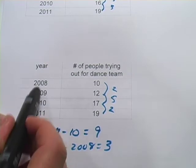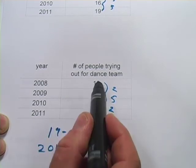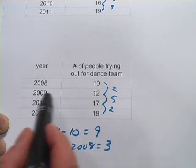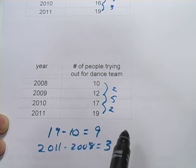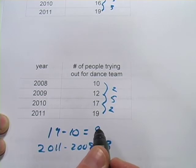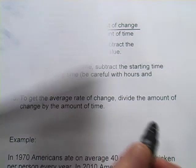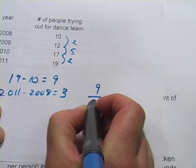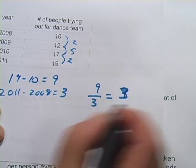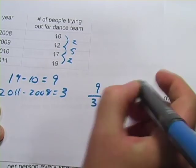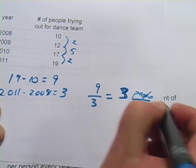Now, some people get a little hung up here and say it looks like there are four years. How come it says there are three years? Well, we really only have three years of change — 2008 is a starting point, then 2009 is really the first year there's a change, 2010 the second, and 2011 the third. It's sort of like when you're born you're not one, you're zero. Then finally to get the average you divide the amount of change by the amount of time: 9 divided by 3 equals 3. And you have to think about your units — it's people per year, so three people per year.